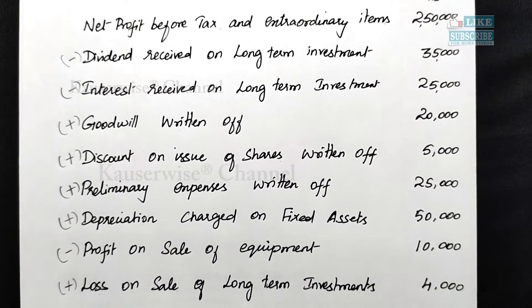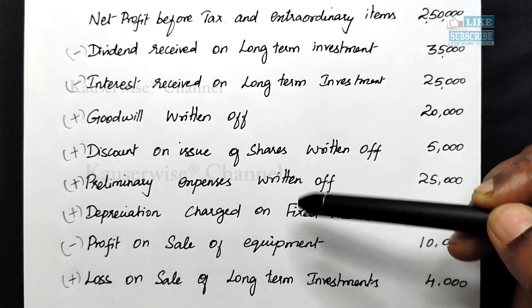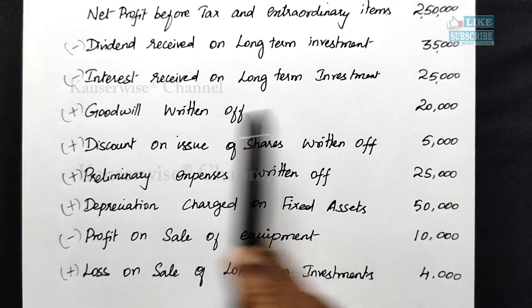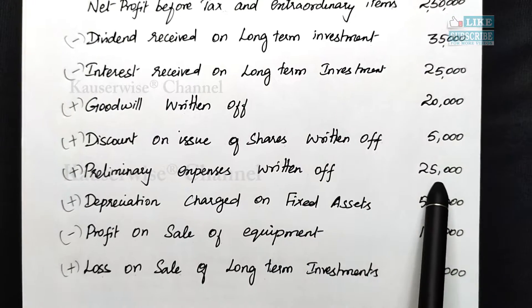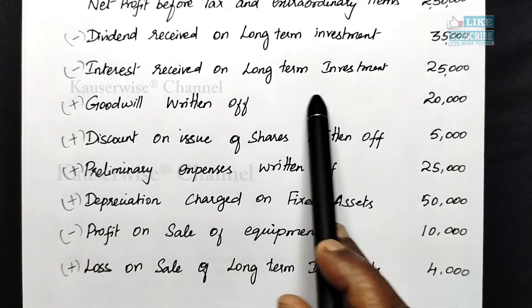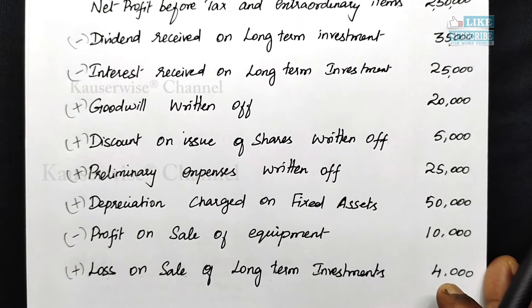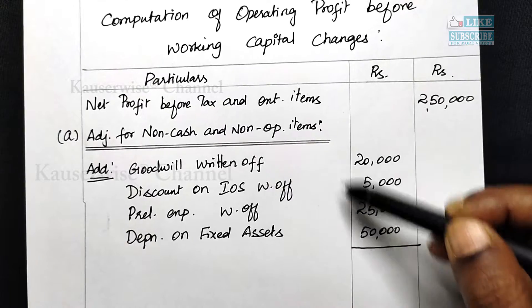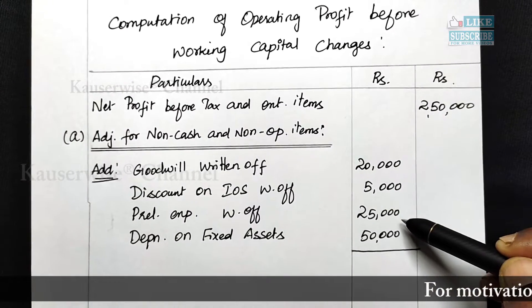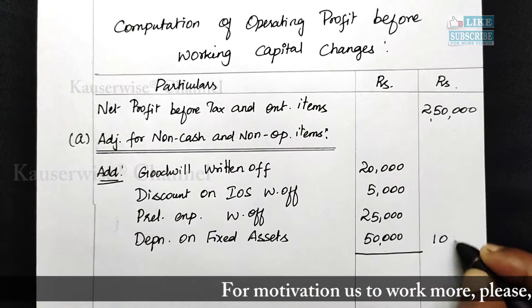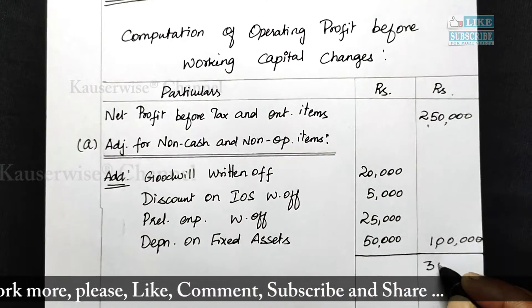Looking at the problem, the non-operating and non-cash expenses are: goodwill written off 20,000; discount on issue of shares written off 5,000; preliminary expenses written off 25,000; and depreciation 50,000. These items need to be added back. In the solution, we add all these: 20,000 plus 5,000 plus 25,000 plus 50,000 equals 1 lakh. Adding this to the net profit gives 3,50,000.